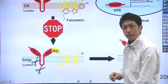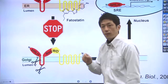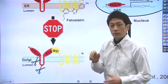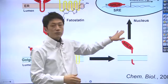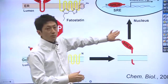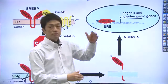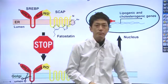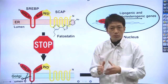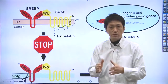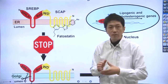Consequently, fatostatin impairs the activation of the genes of enzymes involved in lipid synthesis. So, fatostatin is a compound that stops fat synthesis at the most basic level.